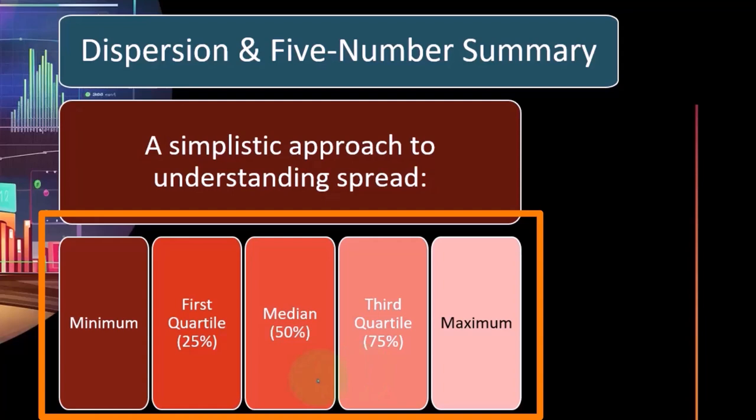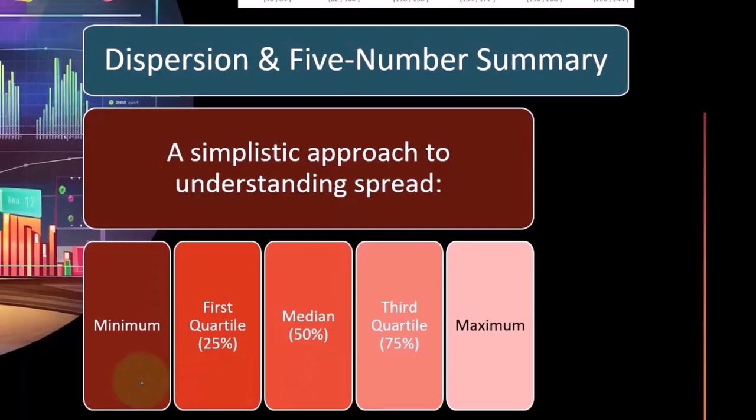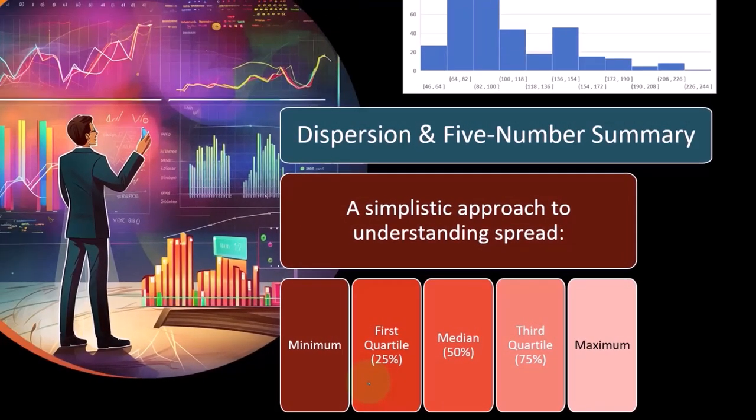So this is a similar concept as simply taking the median, the middle number in the data set, and breaking it out a little bit more than just taking the middle number. We'll take the smallest number. We'll take the first quartile, the first 25%, then the median, which is the second quartile, the third quartile, and the maximum. So if you just have those five numbers, you do get a visual representation of the spread.